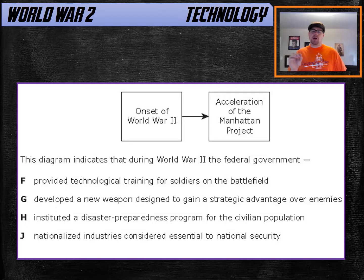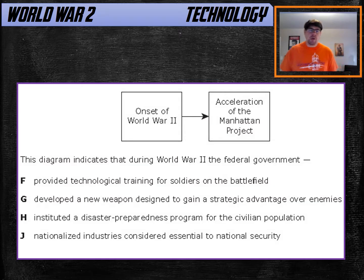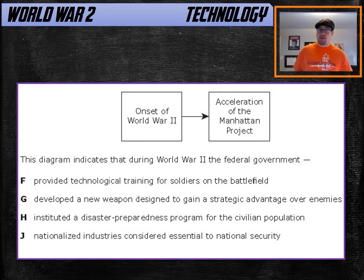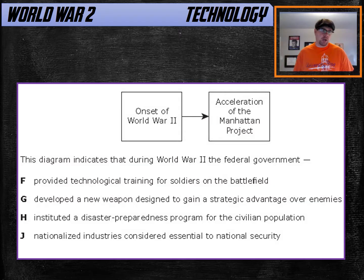This almost always revolves around the atomic bomb. You need to know the code name for the project that created the atomic bomb: the Manhattan Project. Here you have a diagram showing that the beginning of World War Two led to the acceleration of the Manhattan Project — in other words, the onset of World War Two led to more work on the atomic bomb.